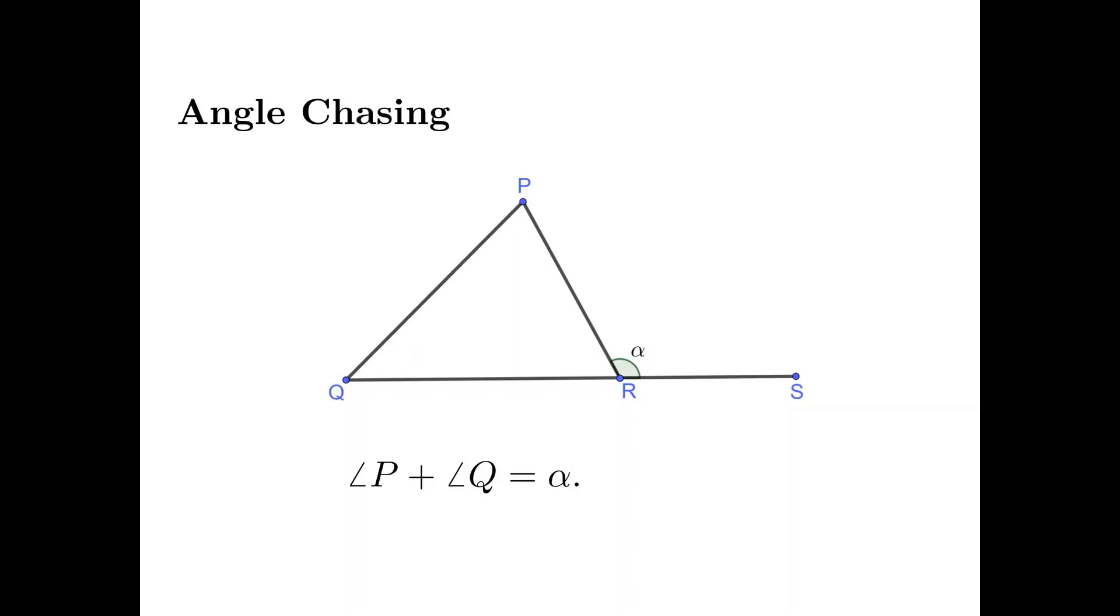In this picture, alpha is an exterior angle which equals the sum of two remote angles, P and Q.